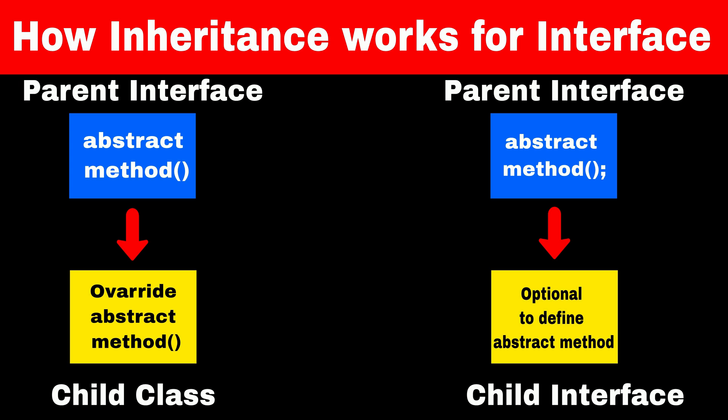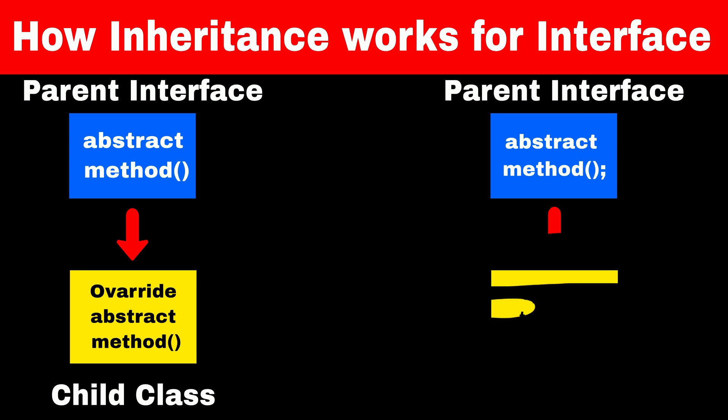So even if you don't write the default implementation of the abstract method, Java won't throw a compile-time error. To summarize: if a class is inheriting an interface, then the class has to implement all the methods listed in the interface. But if an interface is inheriting another interface, it is not mandatory for the child interface to implement all the methods.